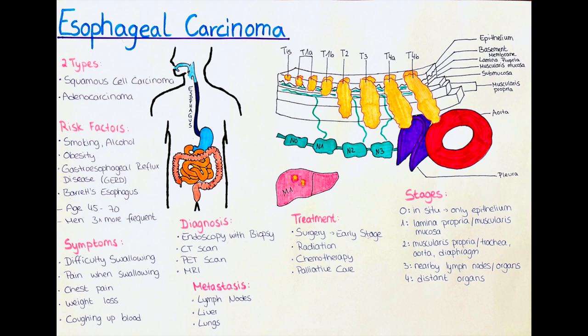The T factor describes the size and extent of the primary tumor, while the N factor indicates whether the cancer has spread to nearby lymph nodes. The M factor indicates whether the cancer has spread to other parts of the body such as the liver or lungs. The AJCC staging system is based on the TNM system, with stages ranging from 0 to 4, where stage 0 is the earliest and stage 4 is the most advanced.